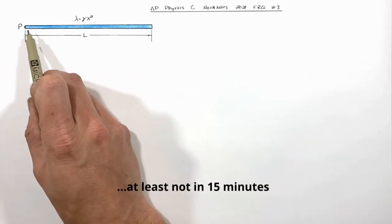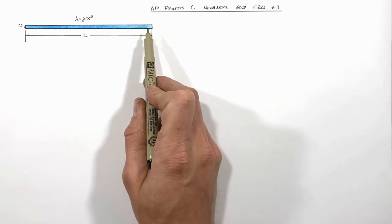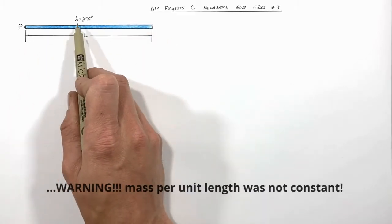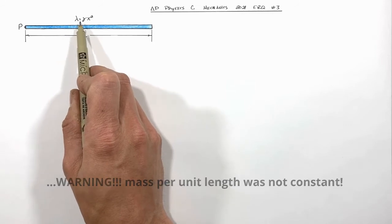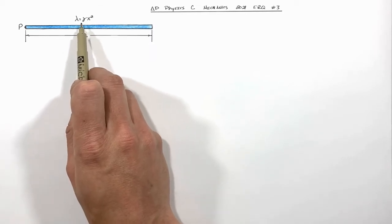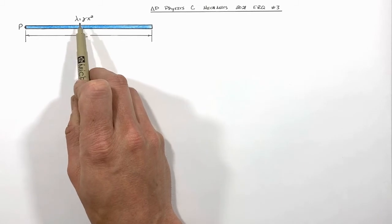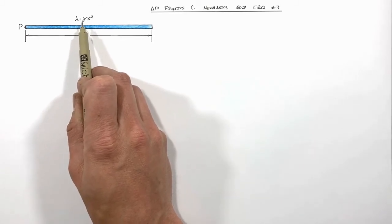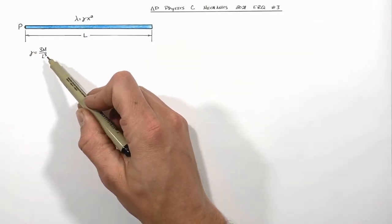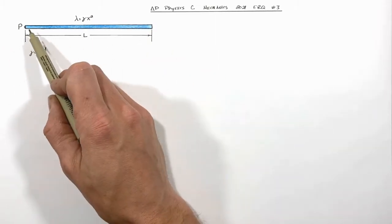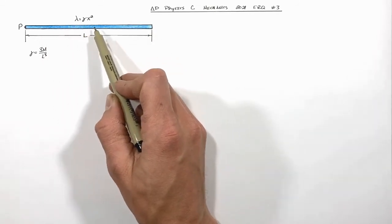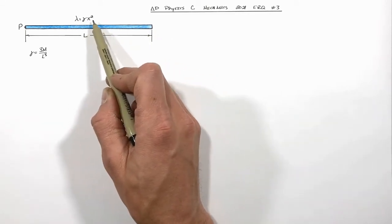What we have is a long thin rod, and that rod is not a nice neat uniform rod. The mass per unit length of the rod is given by λ = γx². Gamma is just a constant given in the problem as γ = 3m/L³. So this is telling us the rod has a linear mass density that varies along its length — as we move farther along this rod, it becomes heavier and heavier.